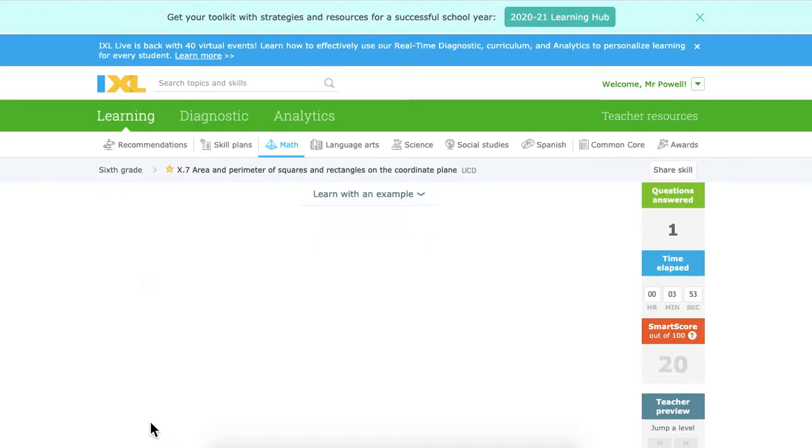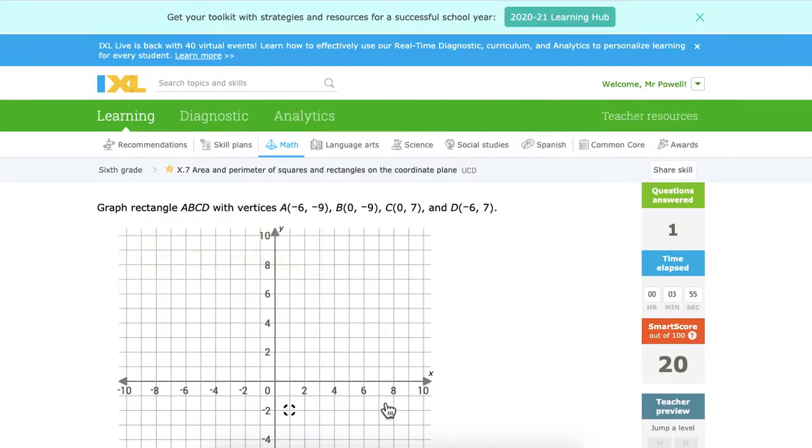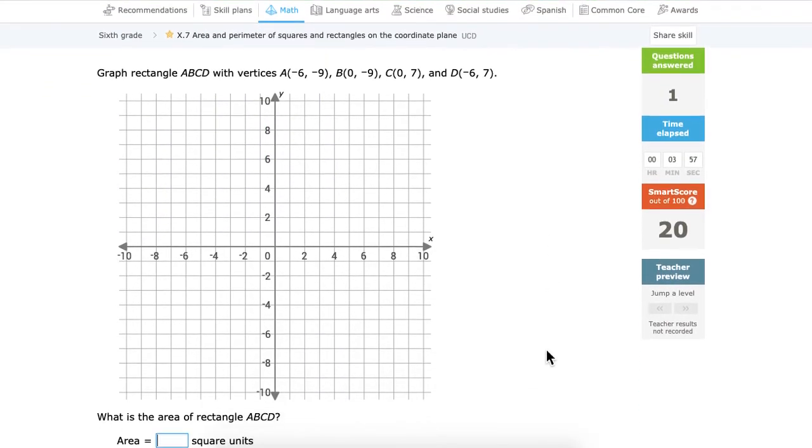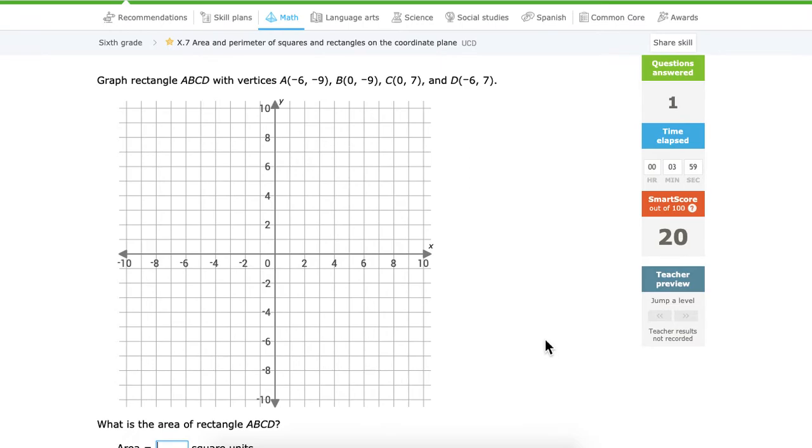Okay, so this one wants the area. Okay, so that's what you got to do on these. Plot them in there and figure out what it is. Rectangle, okay? So negative 6, negative 9. And 0, negative 9, 0, 7. And negative 6, 7.